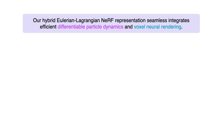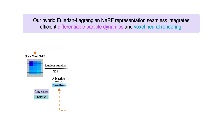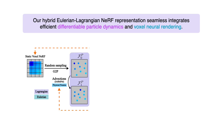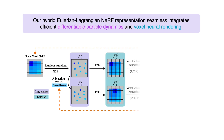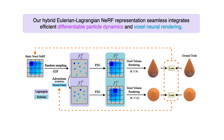We have developed a hybrid approach that combines Eulerian and Lagrangian representations. This involves using Lagrangian particles to move the radiance fields while utilizing the Eulerian voxel-based NERV representation for efficient neural rendering.